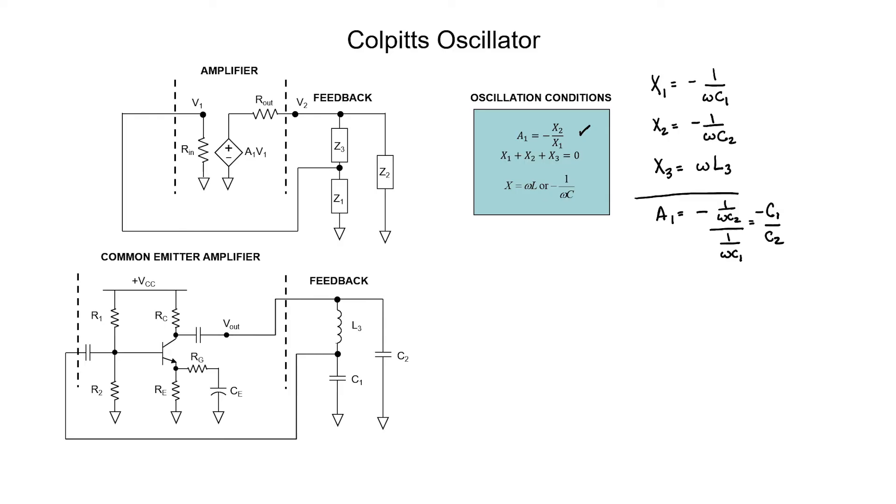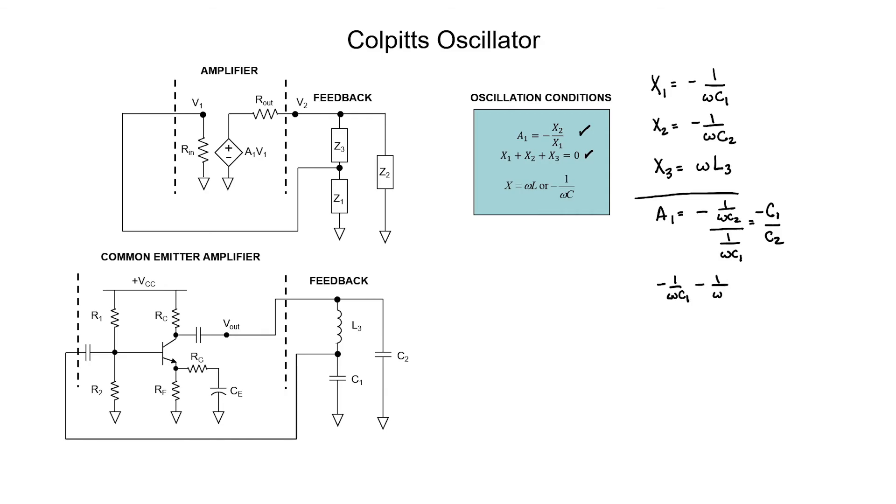The magnitude of the gain of the inverting amplifier has to be C1 over C2 in order for the oscillation to sustain itself around the loop. When we actually design this circuit, we need to ensure that the magnitude of the gain exceeds C1 over C2 so that the oscillation can get started from noise and so that we can overcome any losses in the circuit. I'm going to multiply every term in this equation by omega C1 C2.